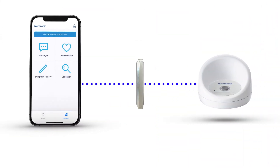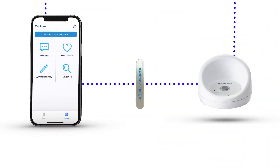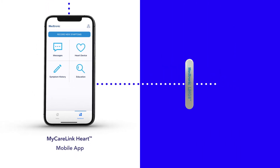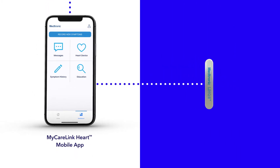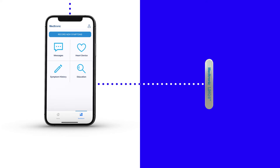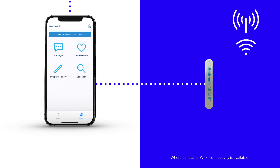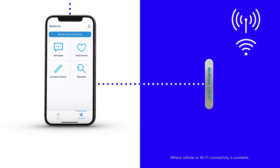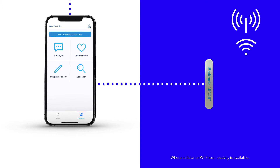There are two ways that the Link2 ICM can wirelessly send data to your clinic. One is through the MyCareLink Heart mobile app that runs on most smartphones and tablets. The app allows you to regularly send data from wherever you are — home or away — so long as you have Wi-Fi or cellular service.